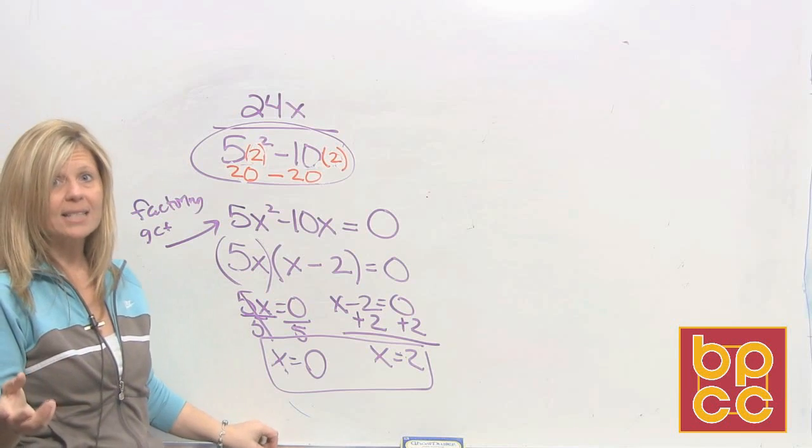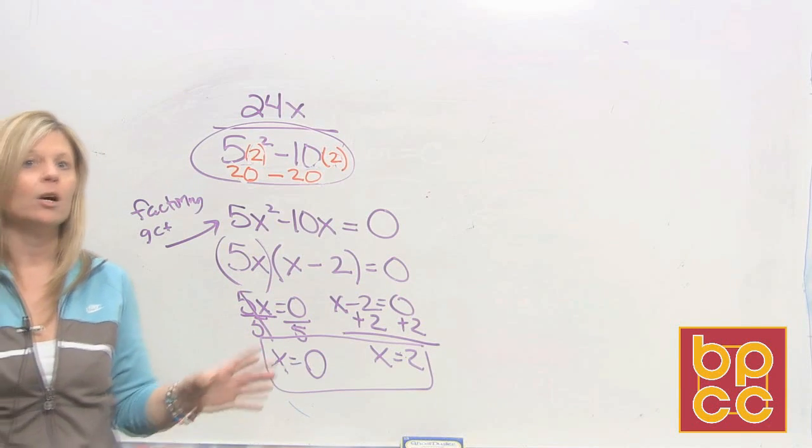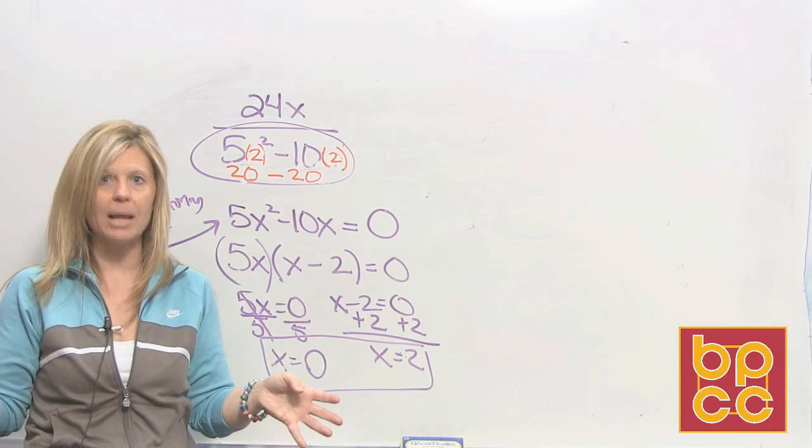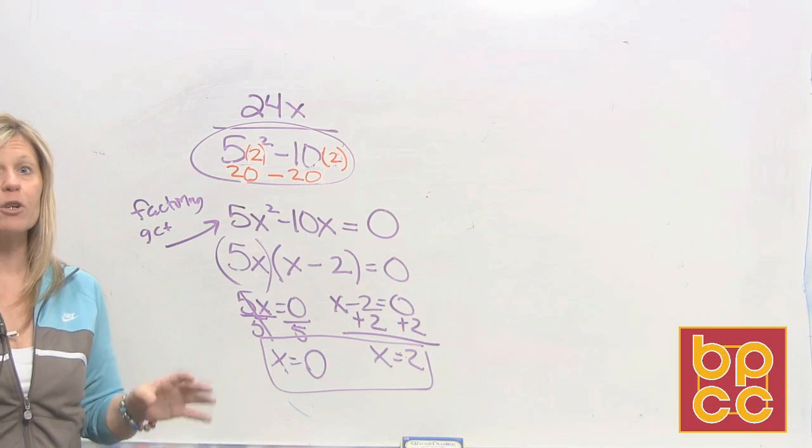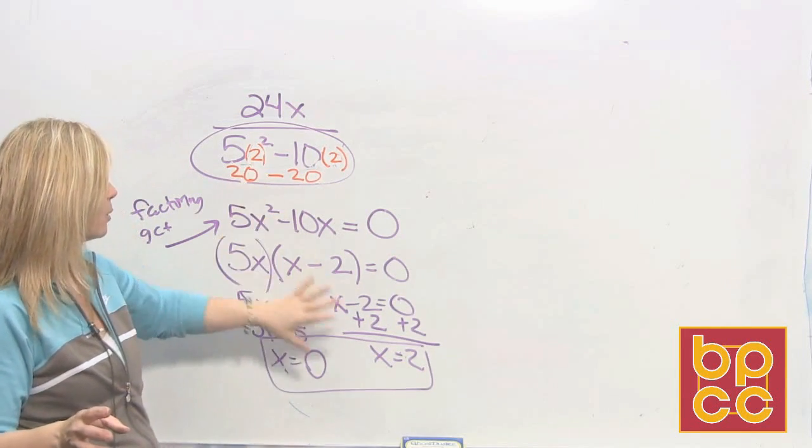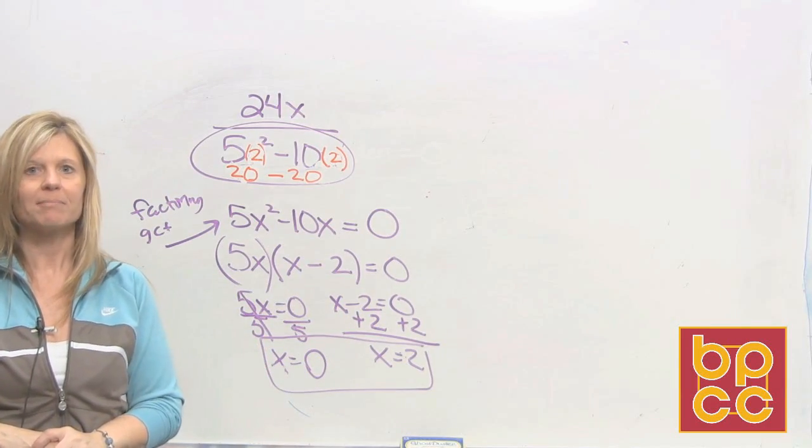So the moral of today's lesson is this new vocabulary word, undefined. What does it mean? It means there's a zero in what part of the fraction? The denominator. You can never have the denominator be zero. So therefore it's important we figure out in algebra what numbers would make the denominator zero because they can't be part of our answer. Have a great day.